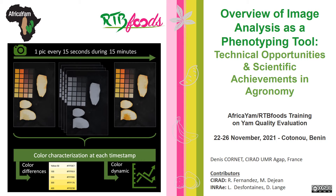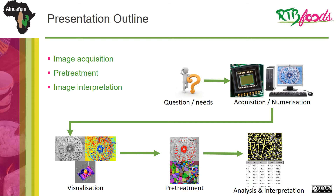I will introduce some theoretical concepts and definitions that are essential to start a phenotyping activity based on image analysis. The practical aspect of image acquisition will be detailed during the day on Thursday. This presentation will go through the main steps of the image analysis pipeline, starting from image acquisition to interpretation. Each step will be illustrated by concrete cases from agronomy and often from yam improvement.